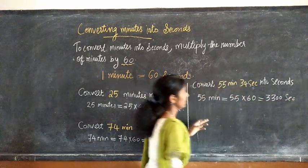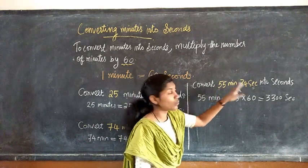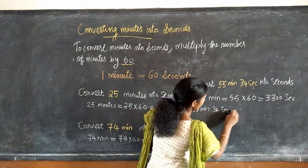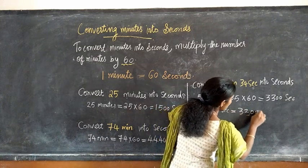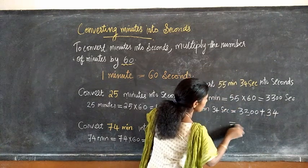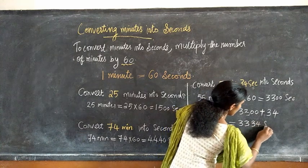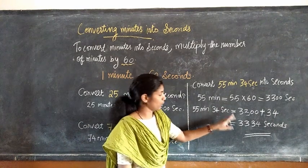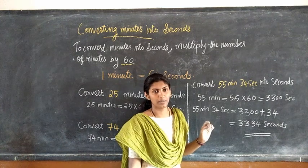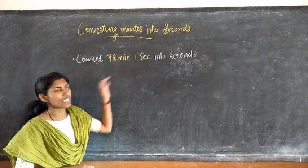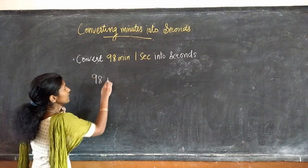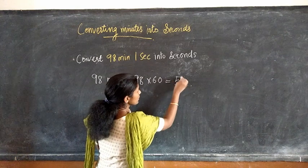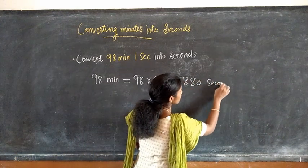Third question: convert 55 minutes 34 seconds into seconds. First, we have to convert 55 minutes into seconds. 55 minutes into seconds is equal to 3300 seconds. Then, 55 minutes 34 seconds equal to 3300 seconds plus 34. Once again, 55 minutes 34 seconds equal to 3300, 34 seconds.